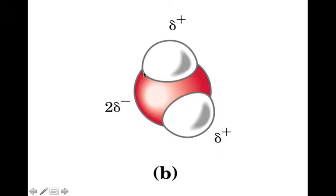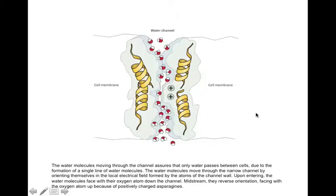The oxygen pulls electrons to itself, giving it a delta negative charge, and the hydrogens get electrons pulled away, giving them a delta positive charge. As water molecules move through the channel, they go in single file and orient themselves in the local electric field formed by the atoms of the channel wall.